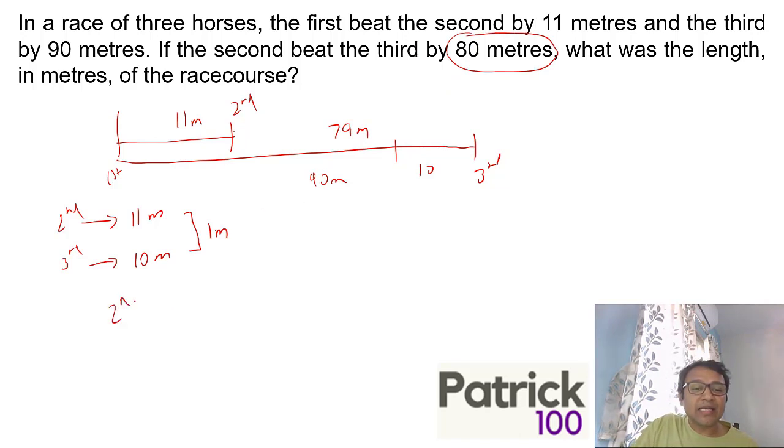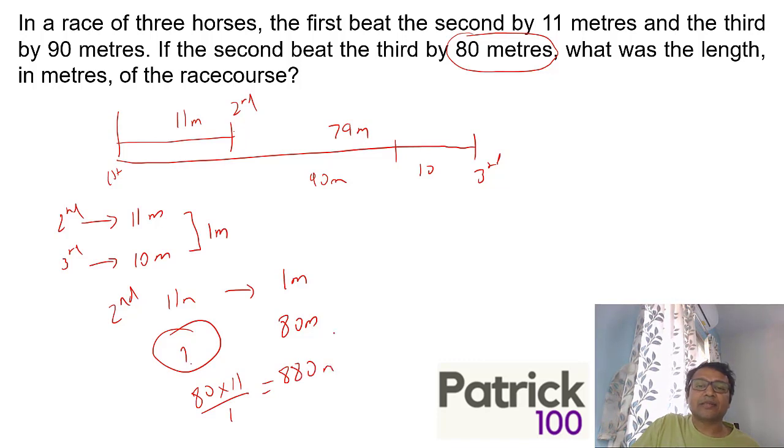When the second runs 11 meters, he beats the third by 1 meter. So to beat him by 80 meters, how much should the second run? You can cross multiply: 80 × 11 ÷ 1 = 880 meters. So when second runs 11, third runs 10, he beats the third by 1 meter. To beat him by 80 meters: cross multiply, this will get 880 as the answer.